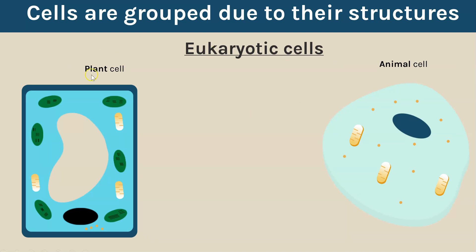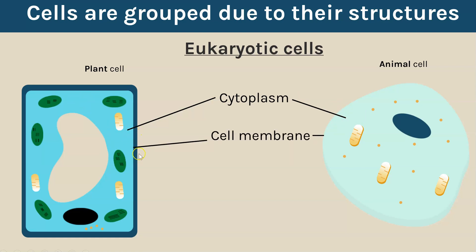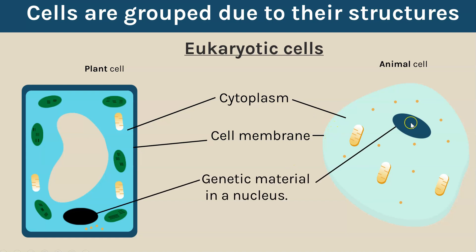Eukaryotic cells are plant and animal cells. The cytoplasm is the liquid part you can see here. The cell membrane is the layer which controls the passage of substances into and out of a cell. Inside the nucleus is where you find the genetic material. You'll notice there are other structures here — mitochondria and ribosomes — but I go into detail on those in another video.